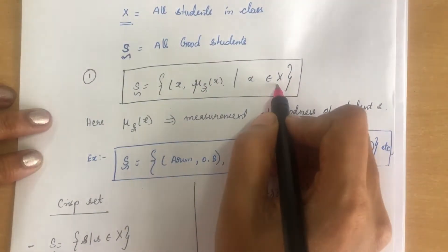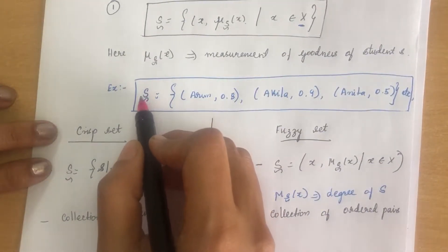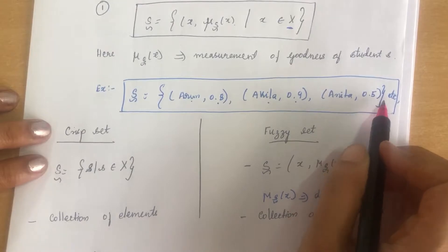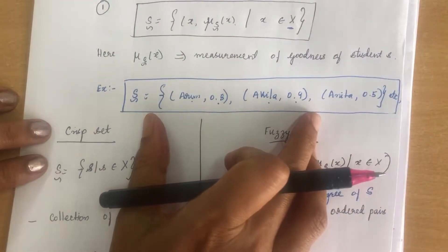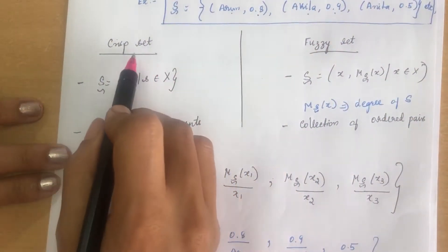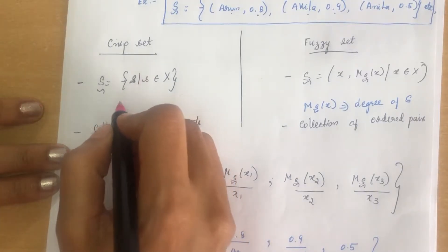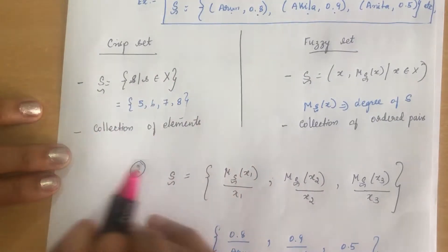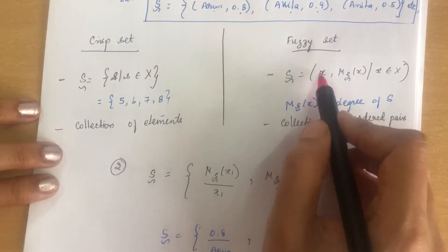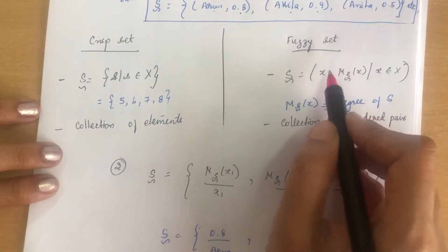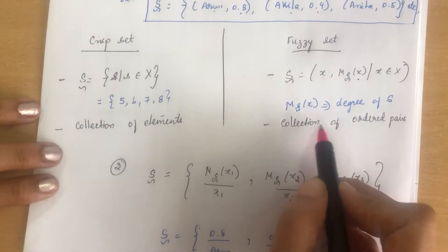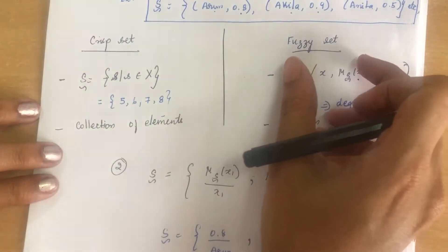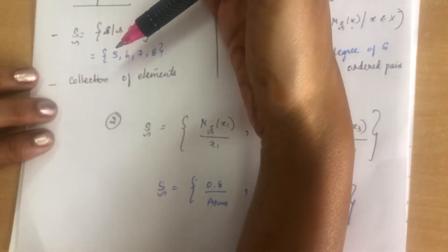So S equals the set of (x, μ_S(x)) where x belongs to universal set X. For example: Arun has goodness 0.8, Akkila has 0.9, Anita has 0.5, and so on. In a crisp set you write only the elements — like {5, 6, 7, 8} — but in a fuzzy set you write each element together with its membership value as ordered pairs. A crisp set is a collection of elements; a fuzzy set is a collection of ordered pairs.